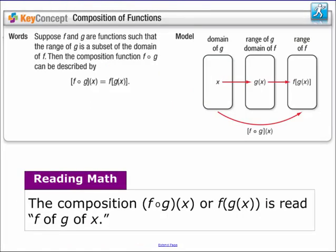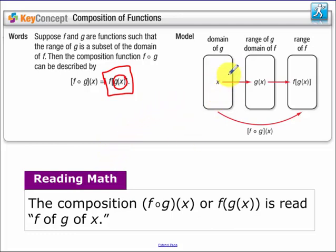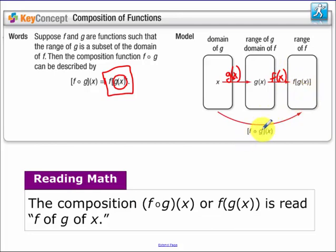Next, composition of functions. A composition is one function g of x inside of another function f of x. You take all possible x values into g of x, get the outputs, and then all of those y values get put into f of x to get your composition f of g of x.